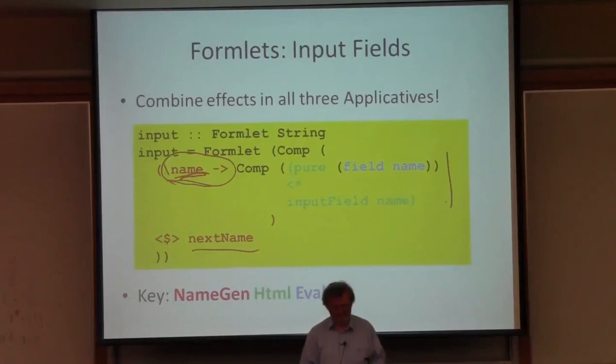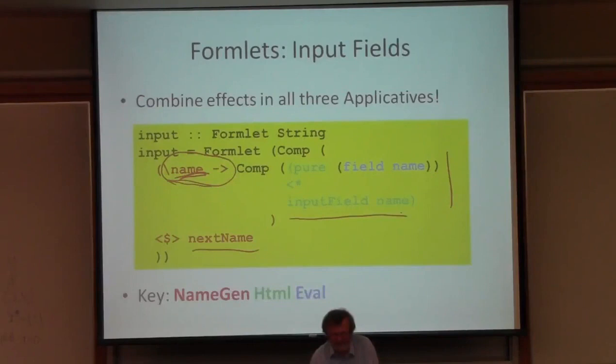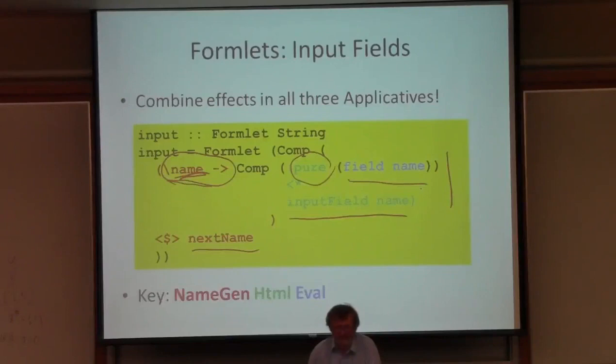That's a good thing because we need it, and that's why we had to generate names first. The green code is the HTML generation — I generate an input field with the correct name and purely move to the next stage. The final stage is the evaluator, and I can just use that `field` function that I showed you. So: generate a name, put the input field in the HTML, and evaluate the result.